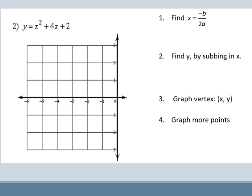Here's another equation. A is 1, B is 4, and C is 2. So if I plug it in, x equals negative 4 over 2 times 1, which is negative 2. So again, my axis of symmetry is x equals negative 2.